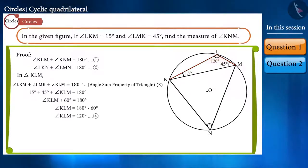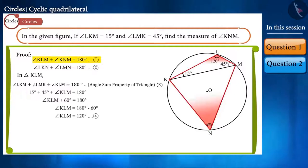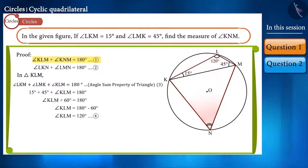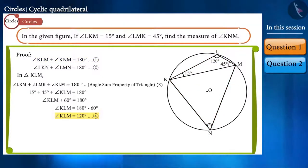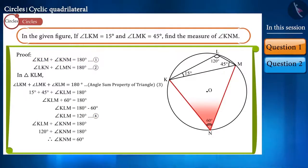We get the value of angle KLM as 120 degrees. But we have to find the value of angle KNM. Friends, observe equation 1 — the sum of these two angles is given as 180 degrees. By placing the value of angle KLM as 120 degrees, we get the value of angle KNM as 60 degrees.